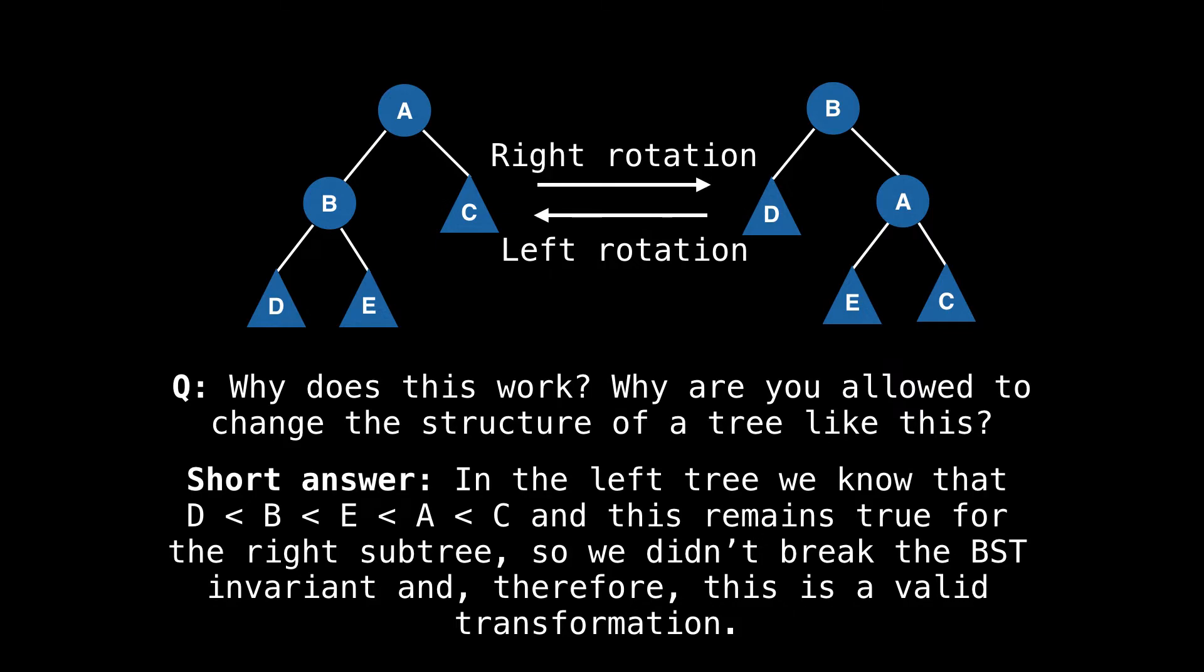If you inspect the left tree, you'll discover that in terms of ordering and placement, node D is less than node B is less than E is less than A is less than C. Then you inspect the right tree and remark that well, this is also true.